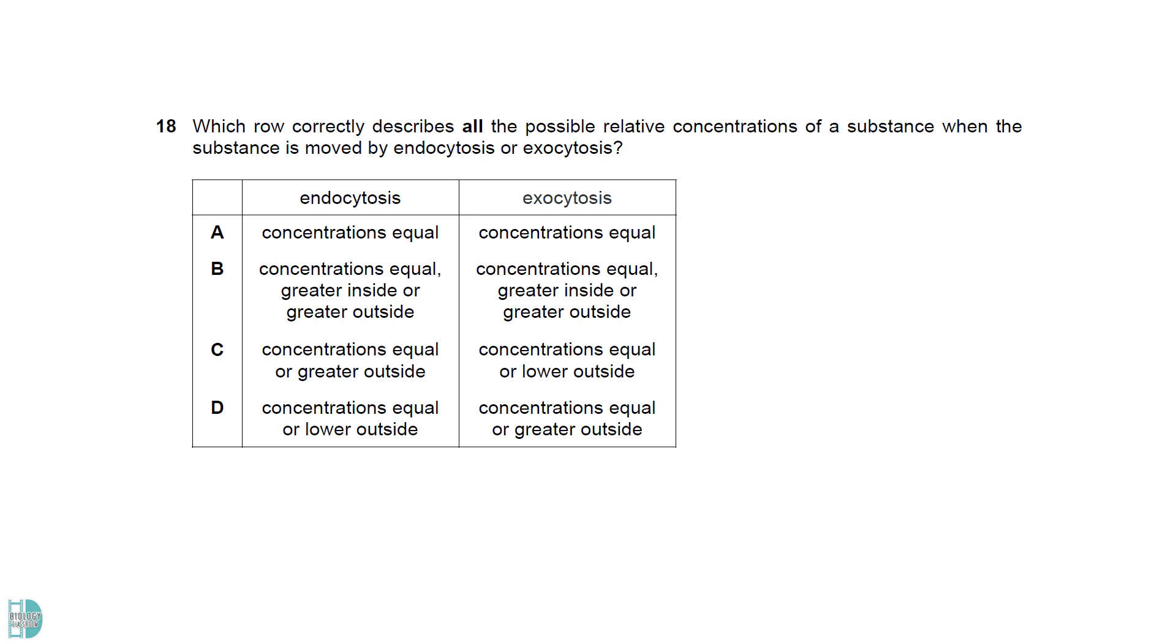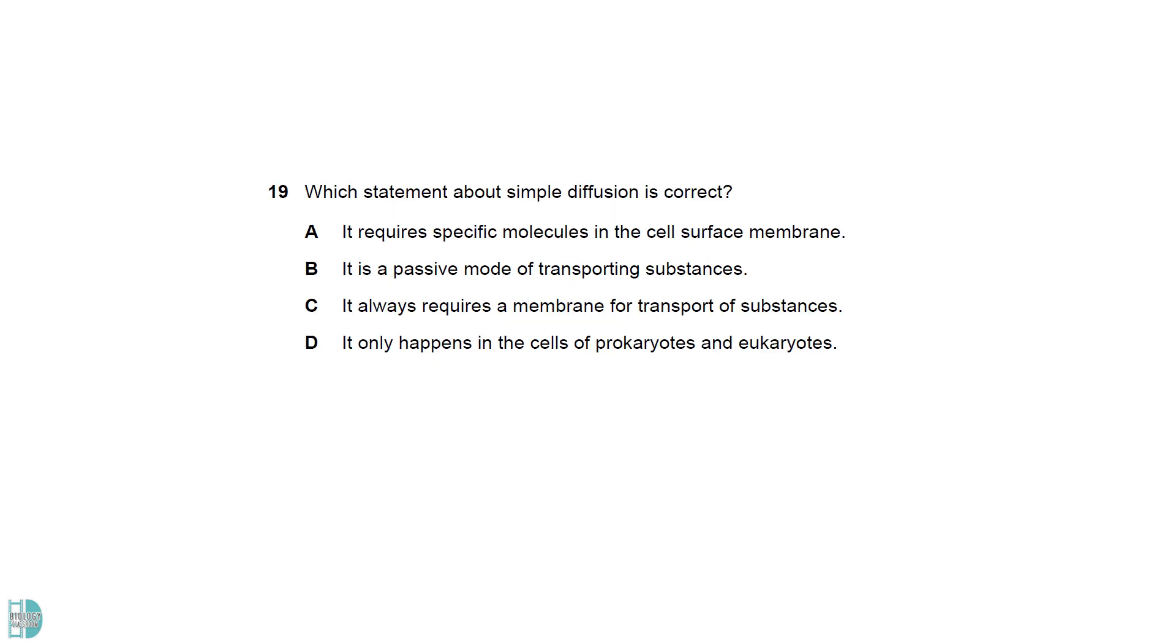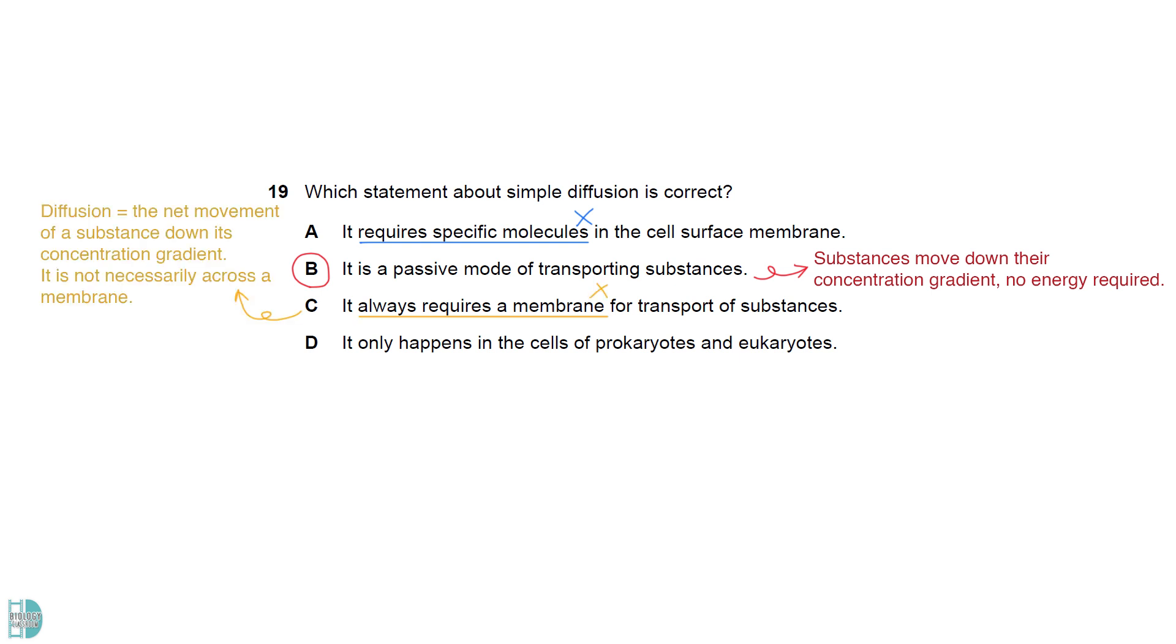Both endocytosis and exocytosis occur according to the needs of the cell. It is independent of the concentration gradient. A is wrong as simple diffusion does not require any specific transport protein. B is correct. It is a passive process that does not require energy. C is wrong because simple diffusion is the net movement of a substance down its concentration gradient. It is not necessarily across a membrane. D is wrong for the same reason as C. Diffusion can occur in the air or in a beaker of water. It is not exclusive to cells.